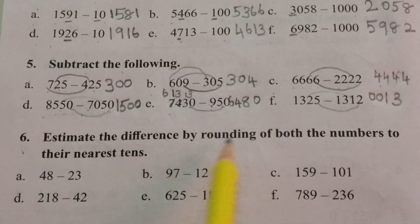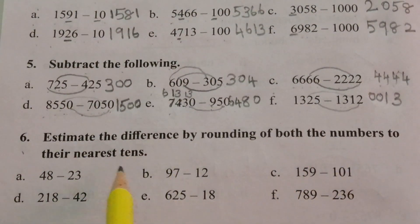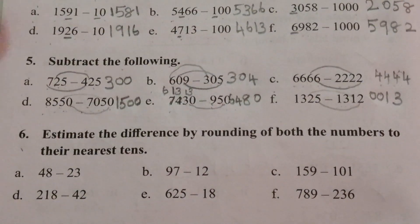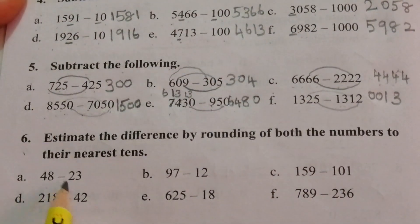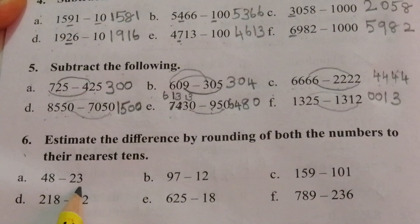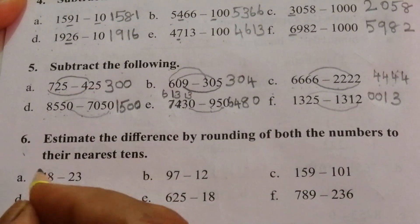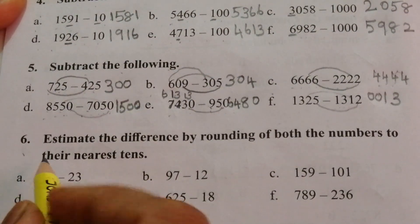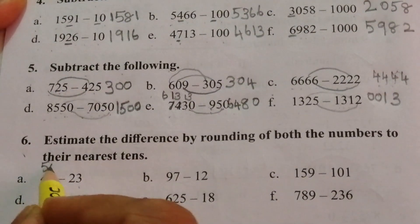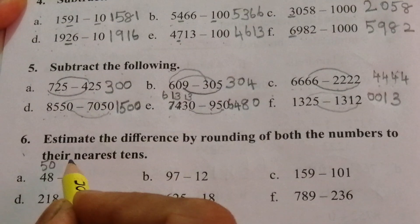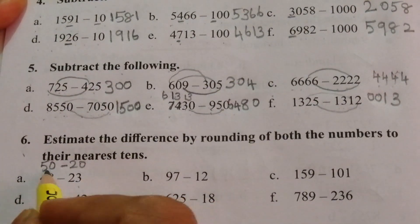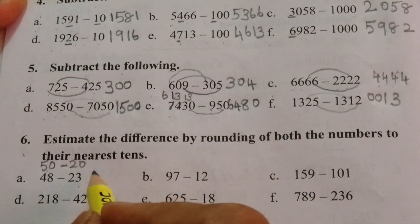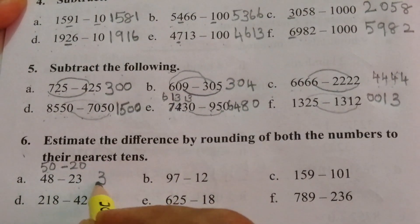Question 6: Estimate the difference by rounding off both numbers to the nearest tens. A: Forty-eight minus twenty-three — forty-eight is nearest to fifty, twenty-three is nearest to twenty, so fifty minus twenty is thirty.